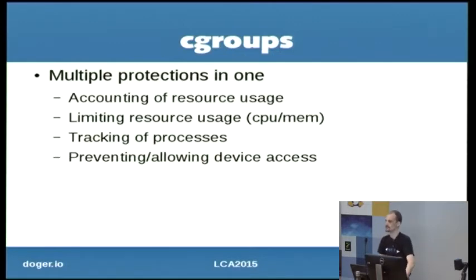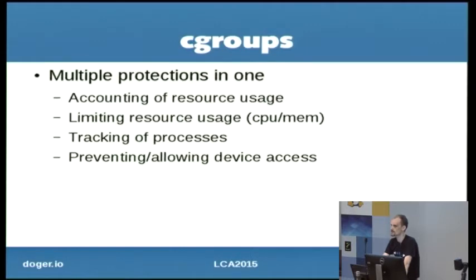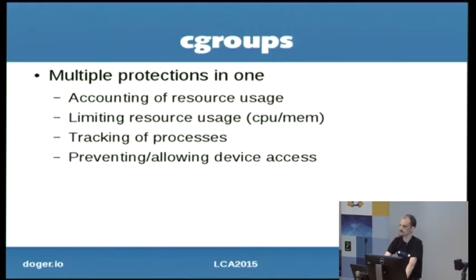C-groups. This is not traditionally a subsystem you'd think of as security, but if you're trying to retain administrative control of a system, it's of vital importance. The ability to account for resource usage and track what's being used on your system is vitally important. But probably the most important feature is tracking of processes. If Apache is inside a C-group, it's very easy to track down an errant process, as the process cannot escape out of the C-group unless you've explicitly reassigned it. Using C-groups to bundle together a group of processes and track them collectively is vital.